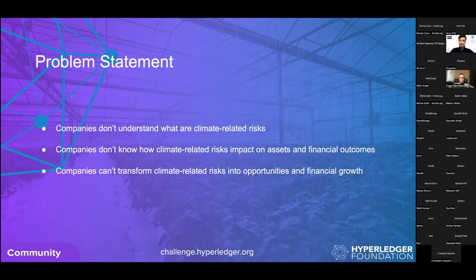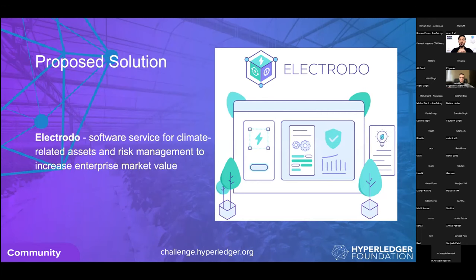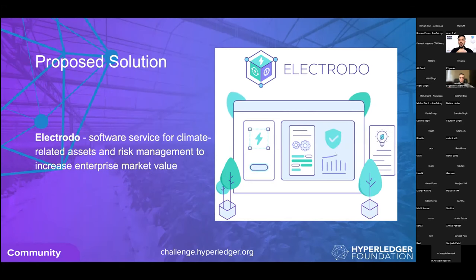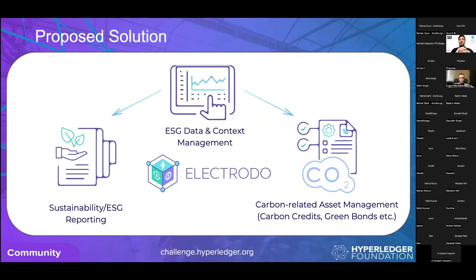The problem: companies don't understand what climate-related risks are or how they impact assets and financial outcomes — so they cannot transform carbon and climate-related risks into opportunities and new financial growth. Electrodo addresses this as a software service for climate-related asset and risk management, aiming to increase enterprise market value through sustainable business models. The solution is a platform for ESG data and context management, gathering and processing data, and generating sustainability ESG reporting — with data verified using Hyperledger Fabric blockchain.